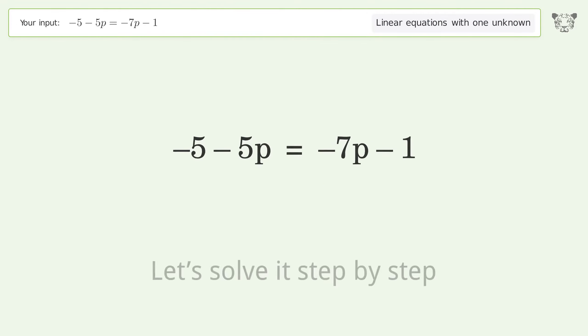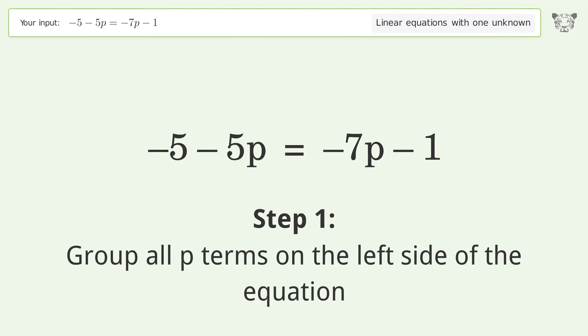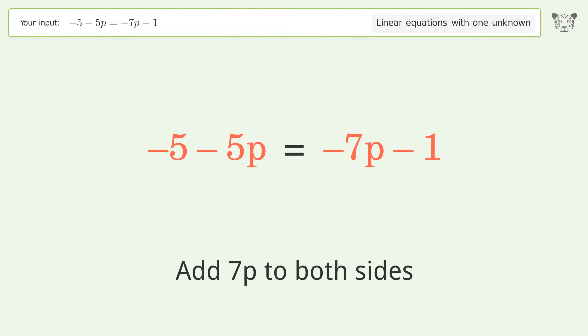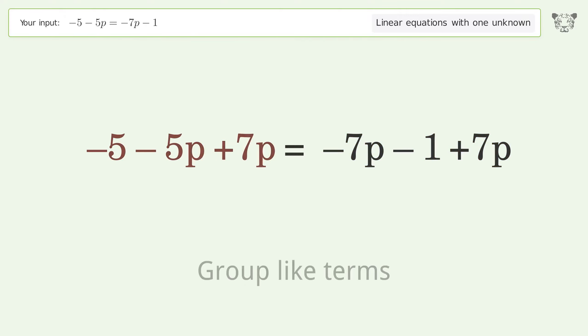Let's solve it step by step. Group all p terms on the left side of the equation. Add 7p to both sides. Group like terms.